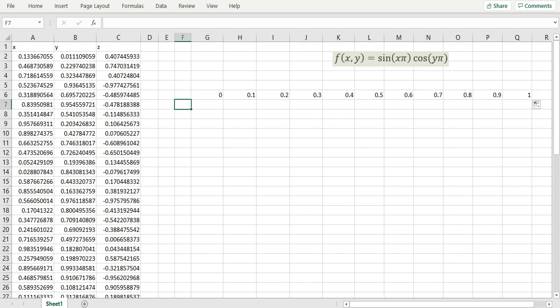Next, I'm going to generate my Y coordinates for the grid, again starting from 0 in an increment of 0.1 and using autofill to generate the rest of the values.